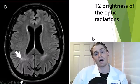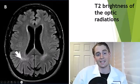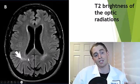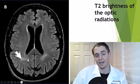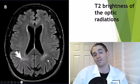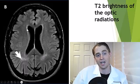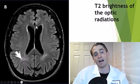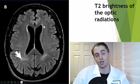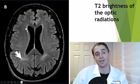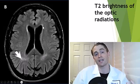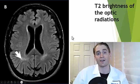It's also common on MRI scans to see some T2 brightness in the area of the optic radiations and around the periventricular caps, especially in the frontal area.